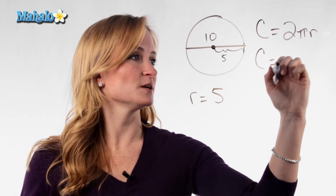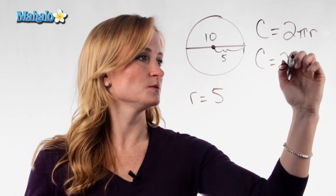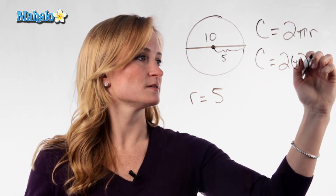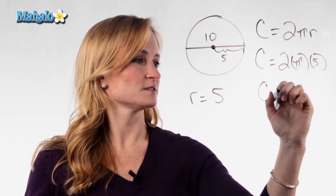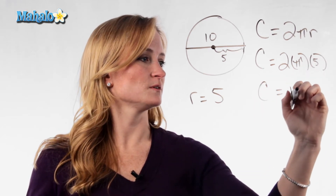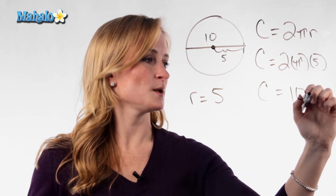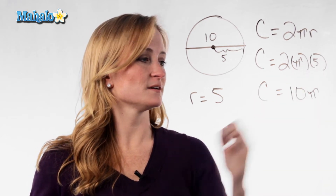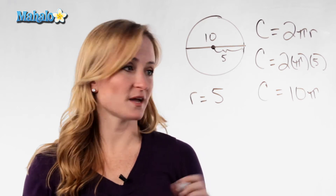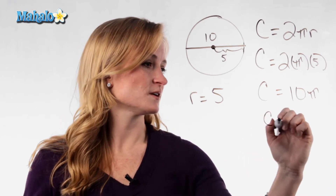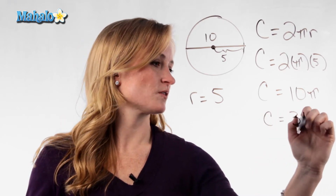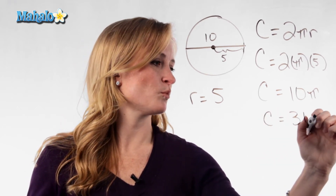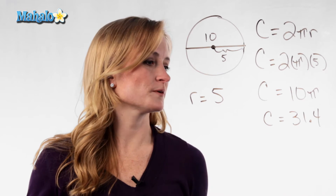So C equals 2 times pi times 5. C would equal 10 pi, and when you multiply that out your circumference is 31.4.